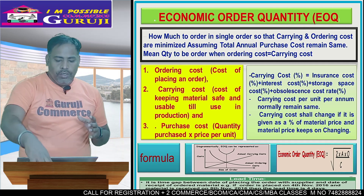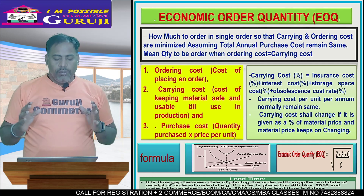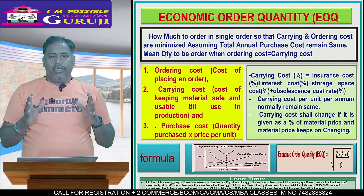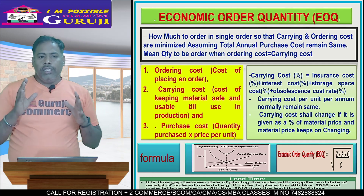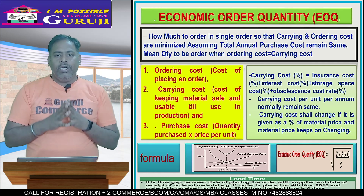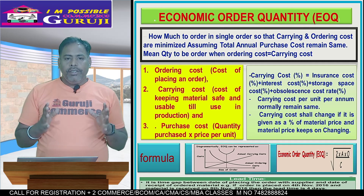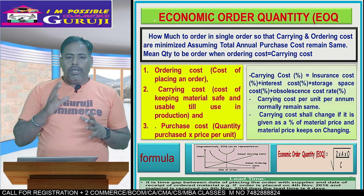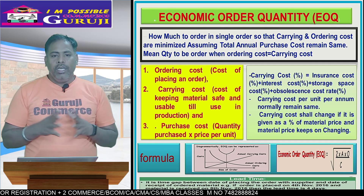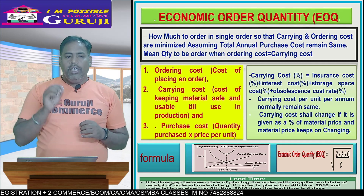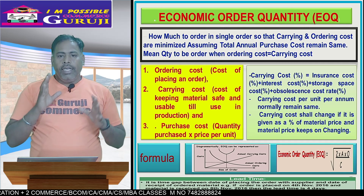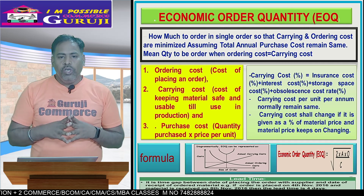Economy ordering quantity is the quantity of how much to be ordered such that the ordering cost and carrying cost will be minimum. That is called economy ordering quantity. Where the ordering cost and carrying cost intersect, that is called EOQ.